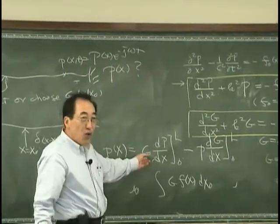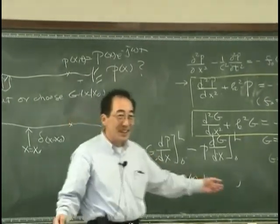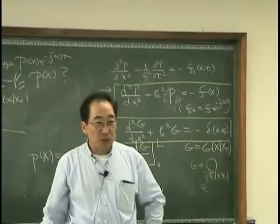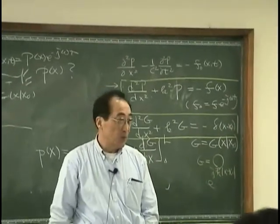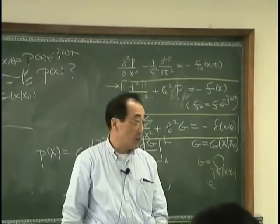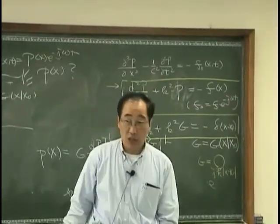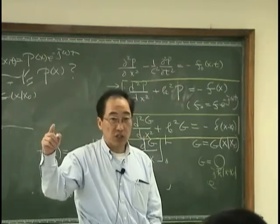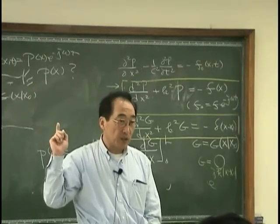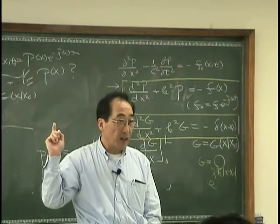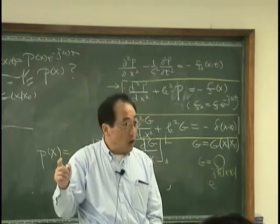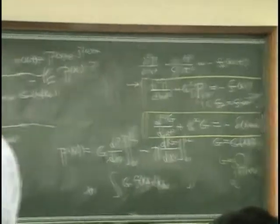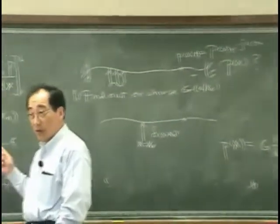And we know, for example, that the monopole 1/r times exponential jkr does satisfy the governing equation. And we also know that dipoles satisfy the governing equation.